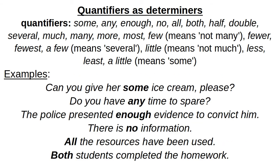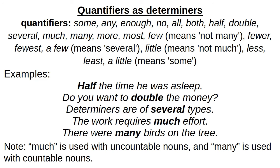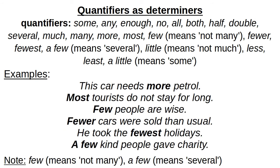More examples: 'do you have any time to spare?' — 'any' is the determiner. 'The police presented enough evidence to convict him.' 'There is no information.' 'All the resources have been used.' 'Both students completed the homework.' 'Half the time he was asleep.' 'Do you want to double the money?' 'Determiners are of several types.' 'The work requires much effort.' 'There were many birds on the train.'